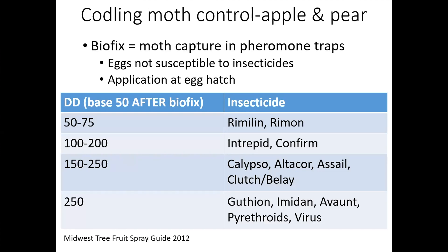We can then take the scientific literature to know when certain insects become active at specific degree day thresholds. For emerald ash borer, it's 500 degree days — that's when adults fly. So when we calculate the accumulated degree days and hit 500, that's when we know the adults emerge.